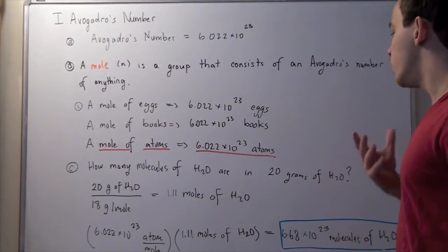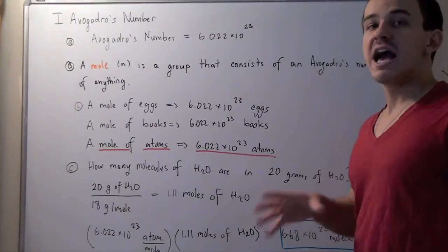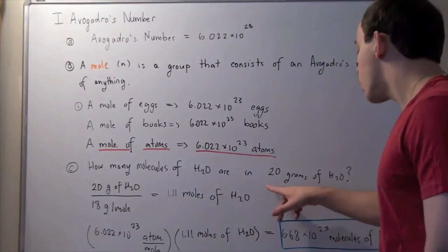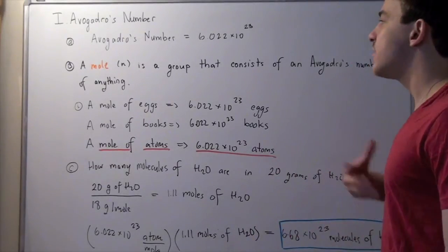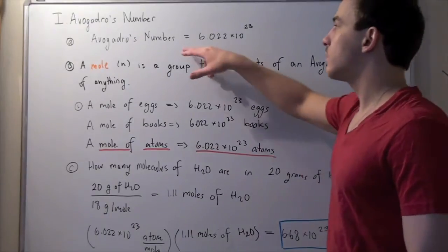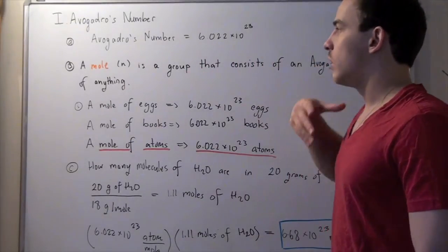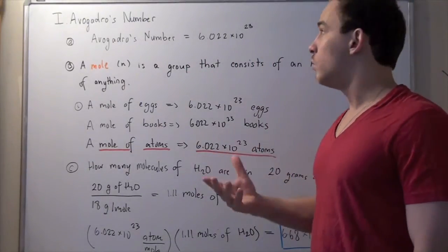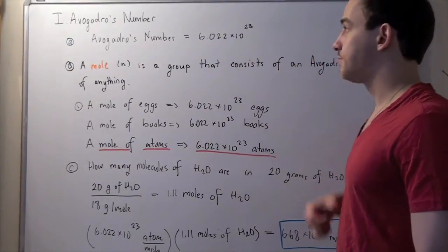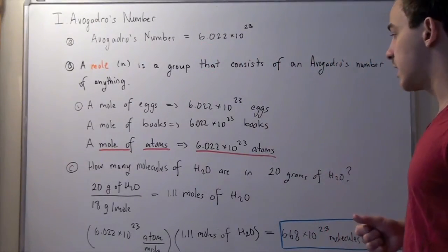To answer this question, we have to first figure out how many moles are in 20 grams of water, and then we multiply that by our Avogadro's number, remembering that one mole of anything is this many atoms or molecules in our case.